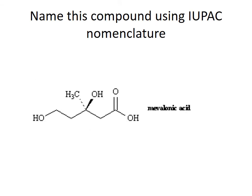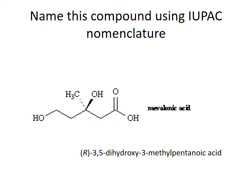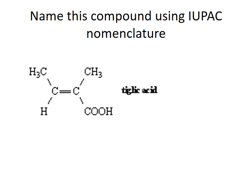Name this compound using IUPAC nomenclature. First, count the carbons: 1, 2, 3, 4, 5 — so this is pentanoic acid. The substituents are: a hydroxyl on carbon 3, a hydroxyl on carbon 5, and a methyl on carbon 3. So it's 3,5-dihydroxy-3-methylpentanoic acid. We also have to specify chirality. Looking at carbon 3: highest priority, next highest priority, next — and since the methyl is the lowest priority and points back, this is R. So the full name is (R)-3,5-dihydroxy-3-methylpentanoic acid.